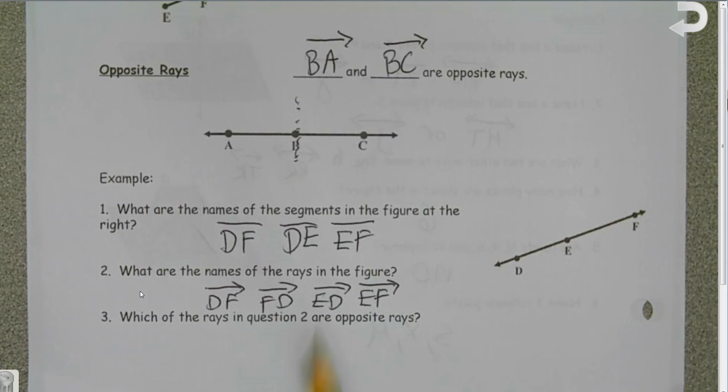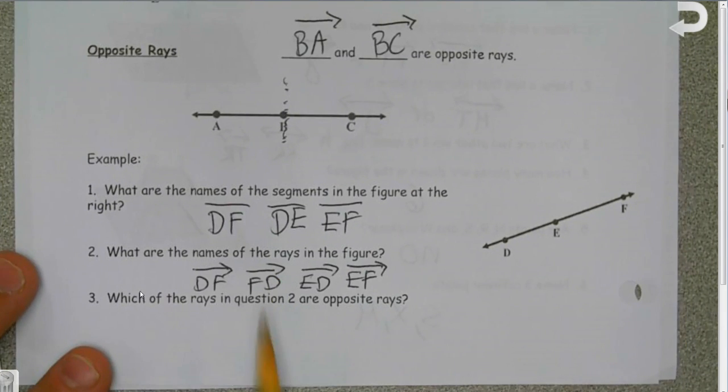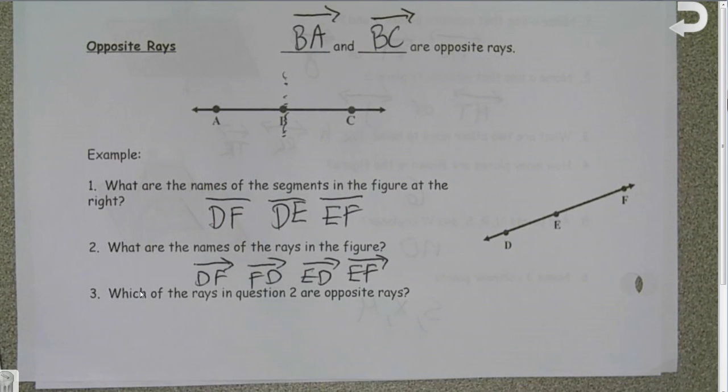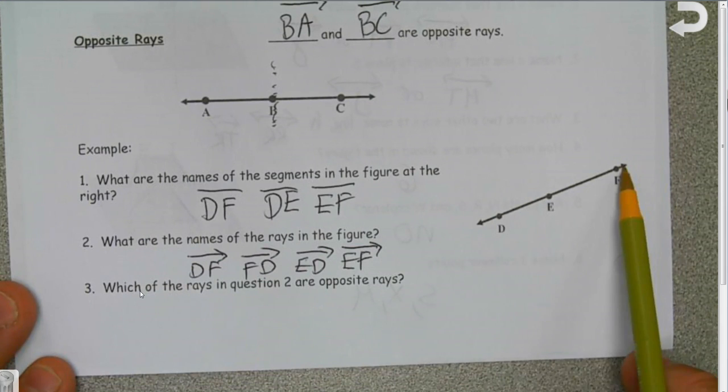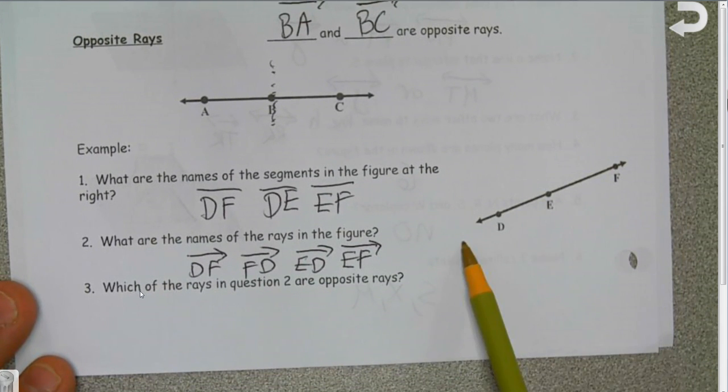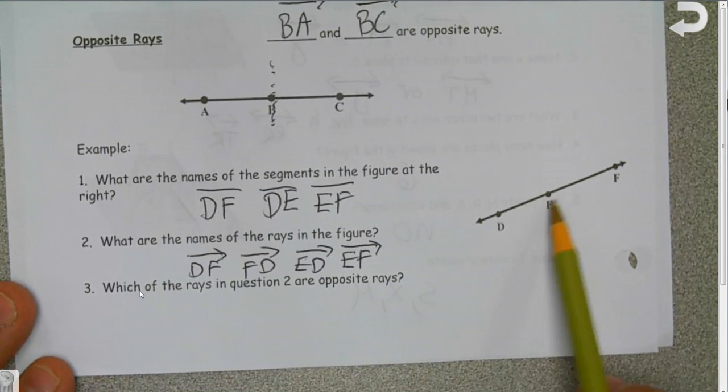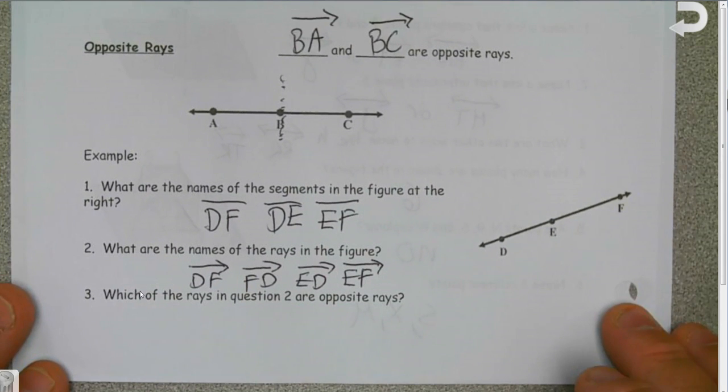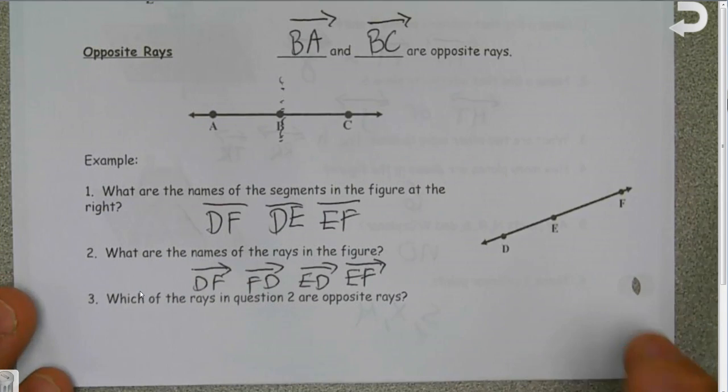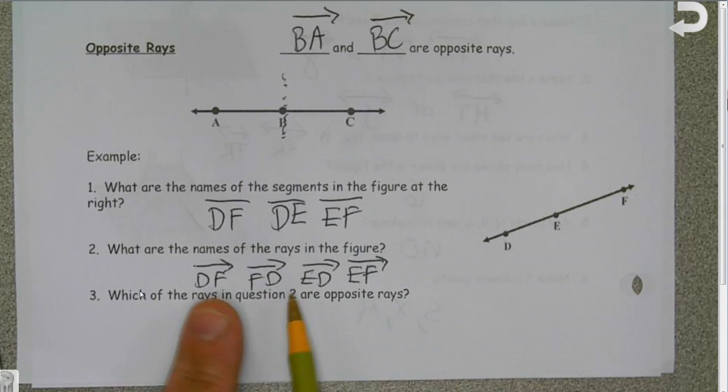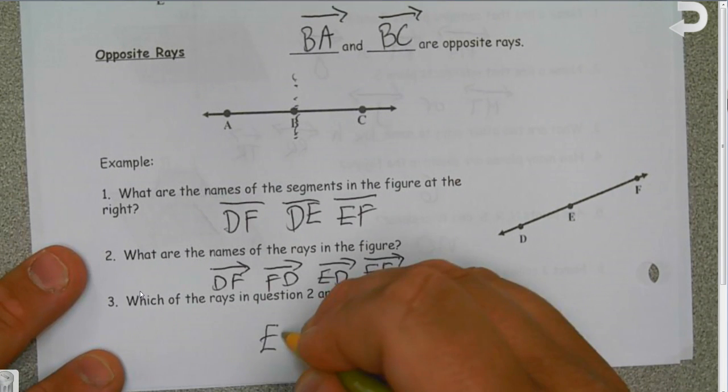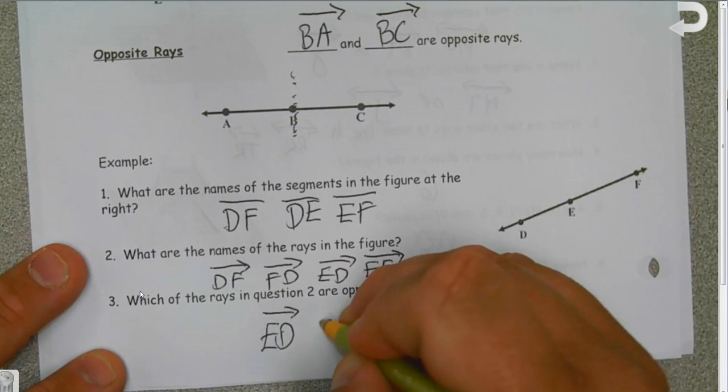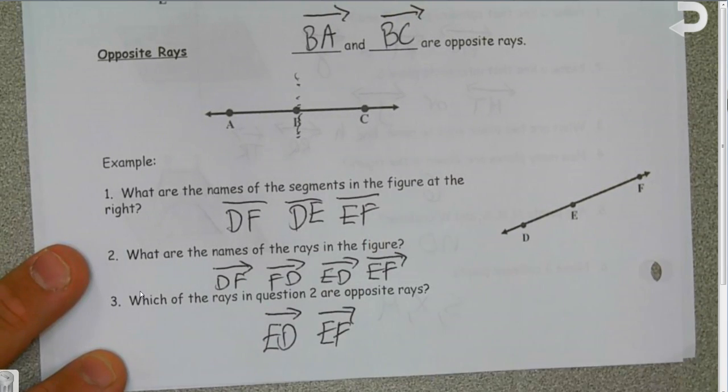What are the names of the rays? There are only four because they have to start at the endpoint: DF, FD, ED, and EF. Now the question is, which of the rays that I've listed here are the opposite rays? Hopefully you realize I split it down the middle, and ED and EF are my opposite rays.